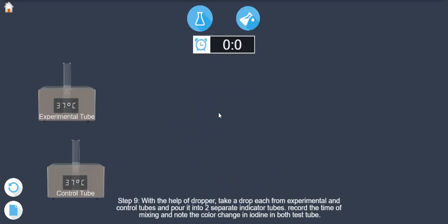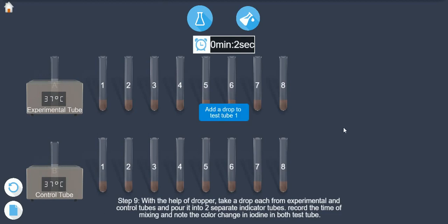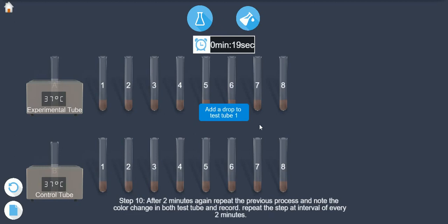Step 9: With the help of a dropper, take a drop each from experimental and control tubes and pour it into two separate indicator tubes. Record the time of mixing and note the color change in iodine in both test tubes.